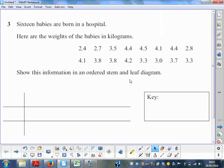Okay, question three. We need to show the information in an ordered stem and leaf diagram. Now the keyword is order, which means it's going to be in some order. So what we're going to do is start looking at the numbers and identify the smallest.